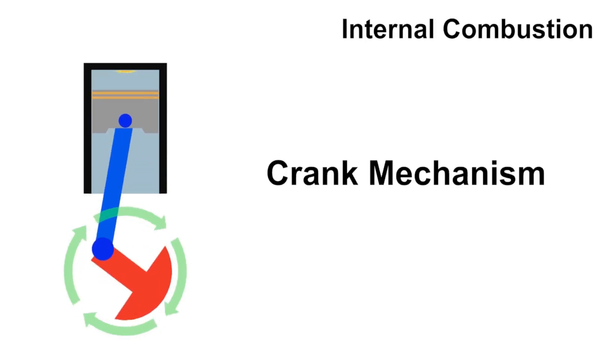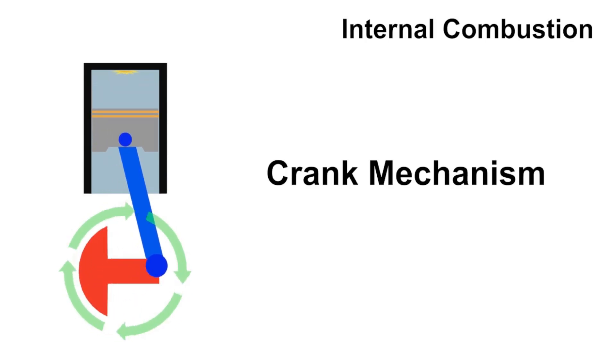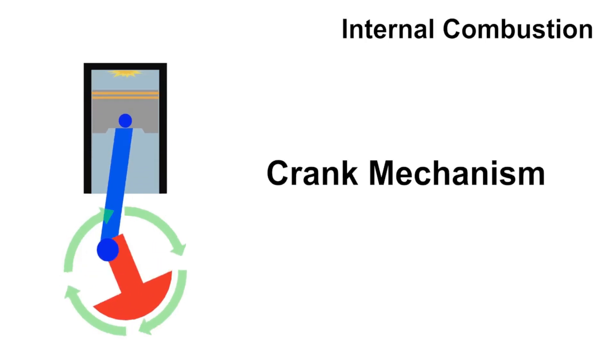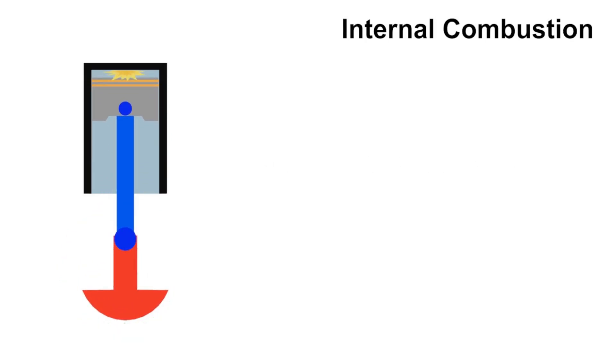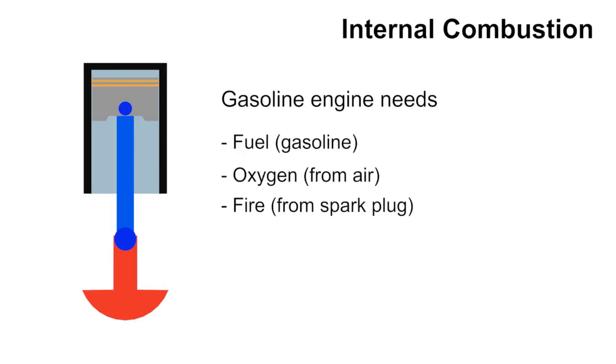So what makes combustion appear in closed cylinders? Here's the difference between the diesel engine and the gasoline engine. In gasoline engine, we need fuel, oxygen, and fire spark. The carburetor will mix fuel and air, then put it into the cylinder. When the spark plug is on, combustion occurs.